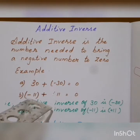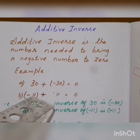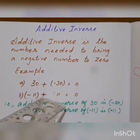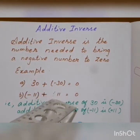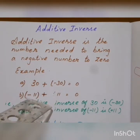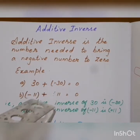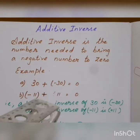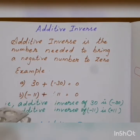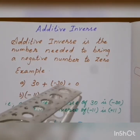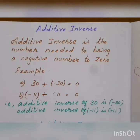Here is the second example. The negative of 11 is minus 11. In which number to be added so it becomes 0? The negative number is added to a positive number and it becomes 0. One negative number, one positive number. That means, additive inverse of 30 is minus 30. Additive inverse of minus 11 is plus 11, which we simply say as 11.